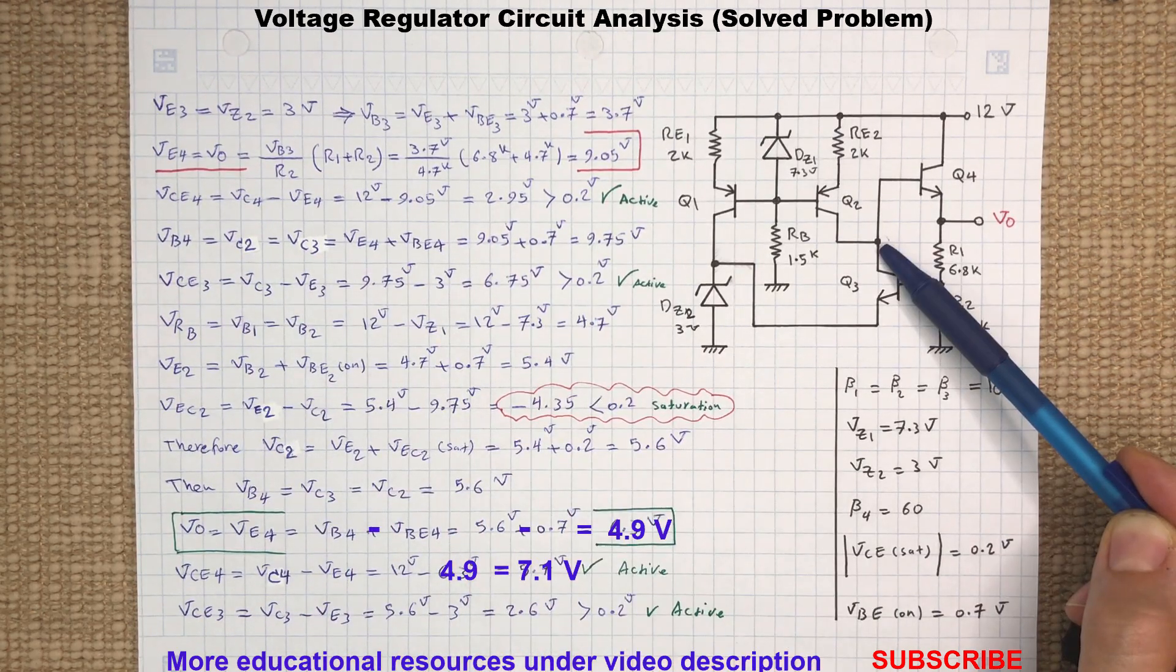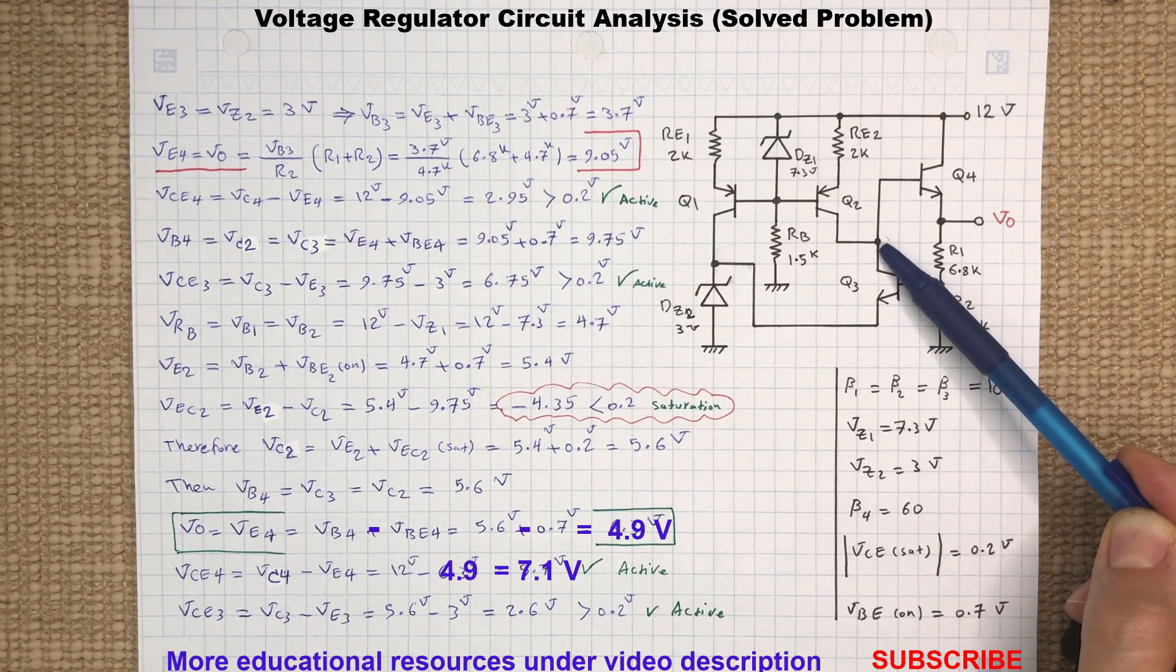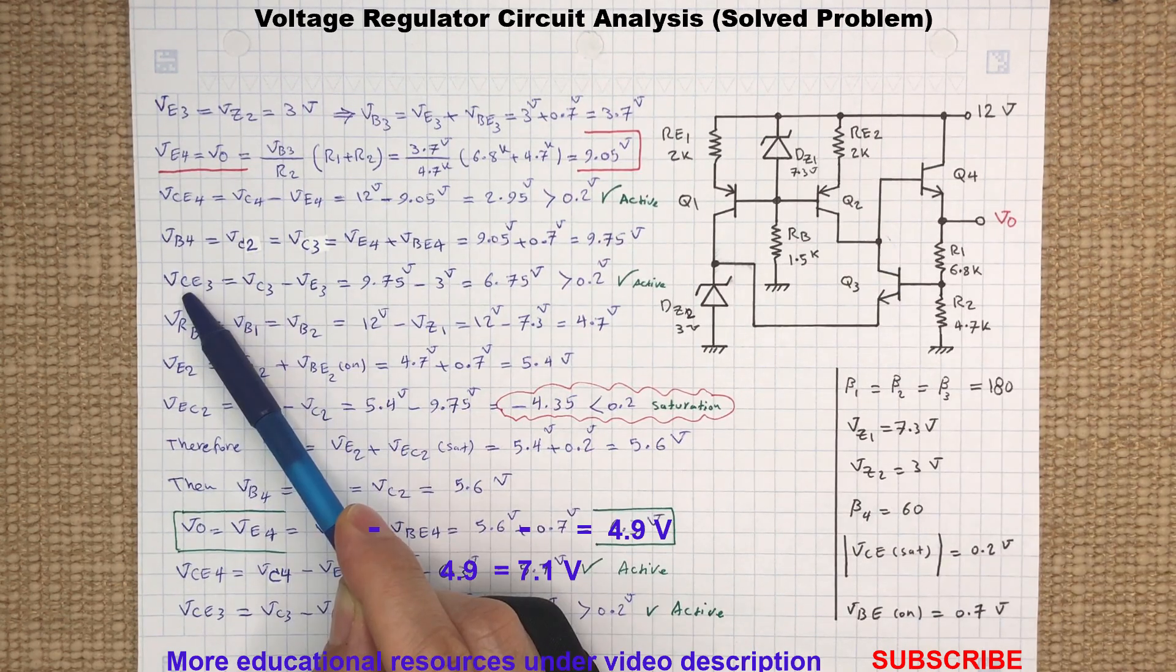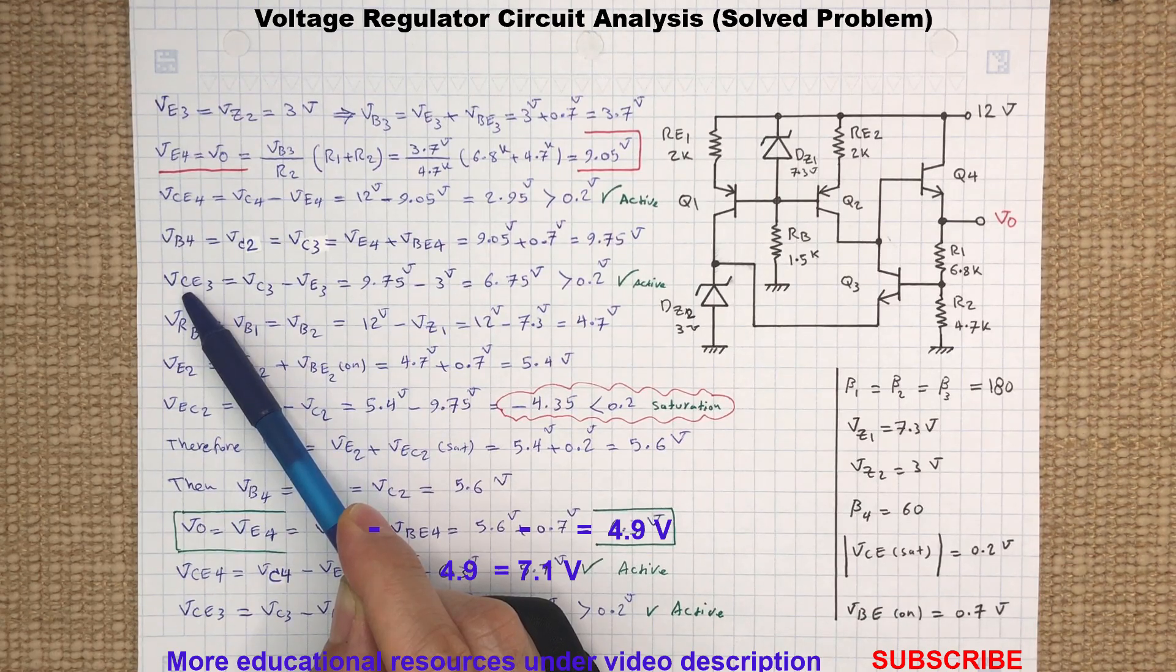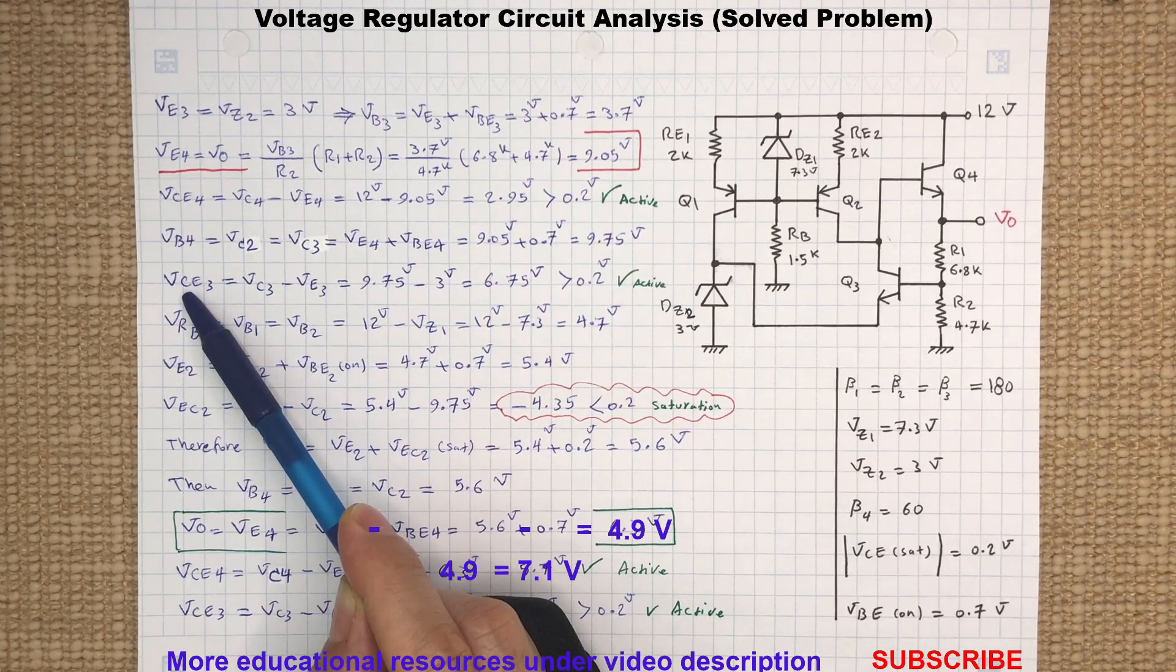Please keep in mind that VBE4, VCE2, and VCE3 are at the same potential since they are at the same node. Now here we verify if Q3 is in active region, which we confirm it is because VCE3 is greater than saturation voltage.